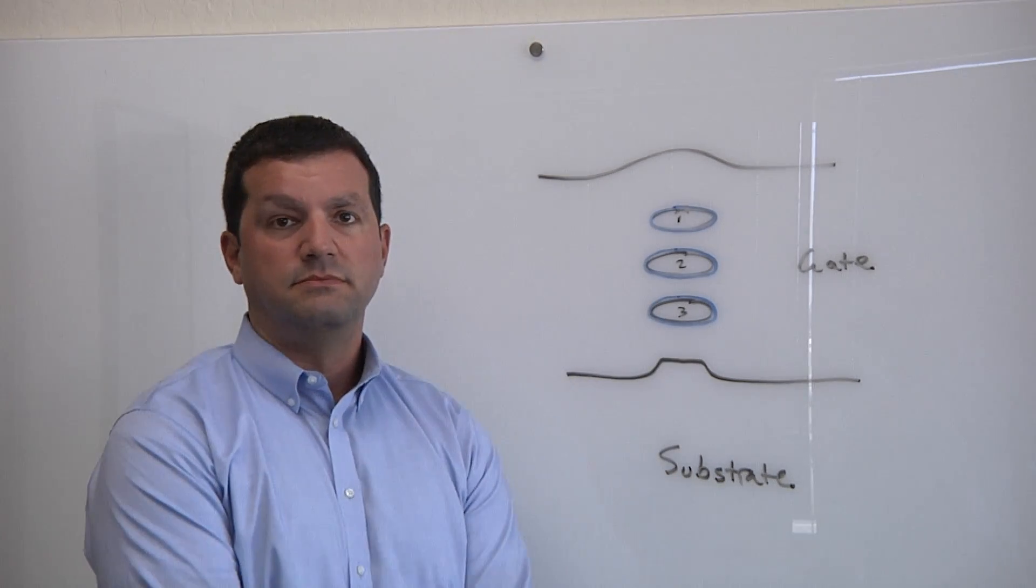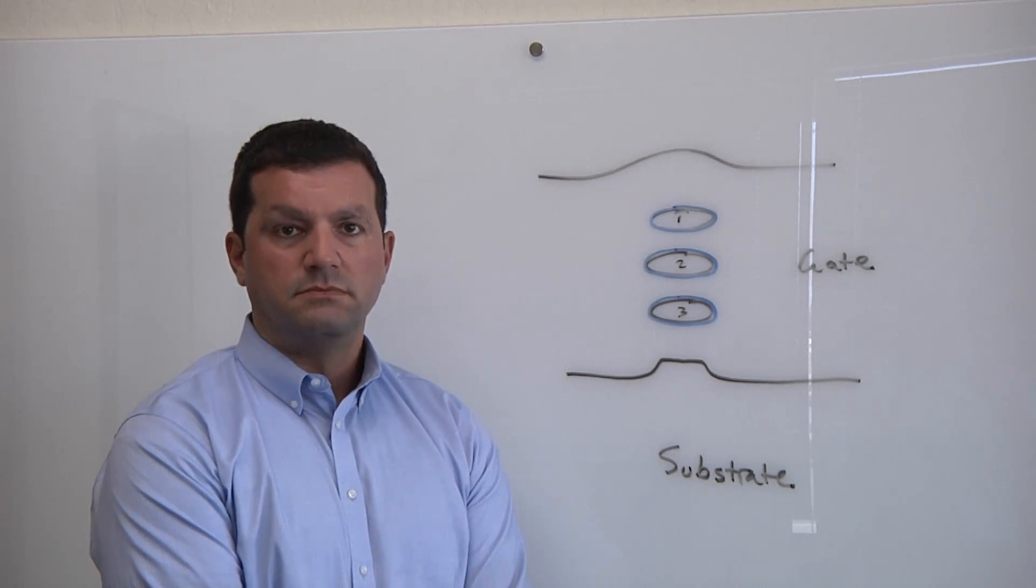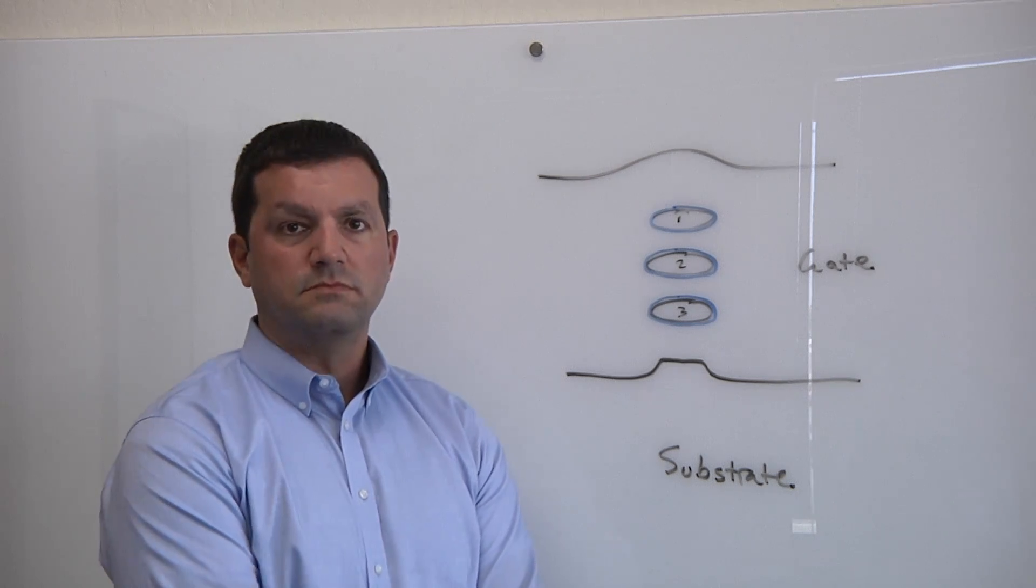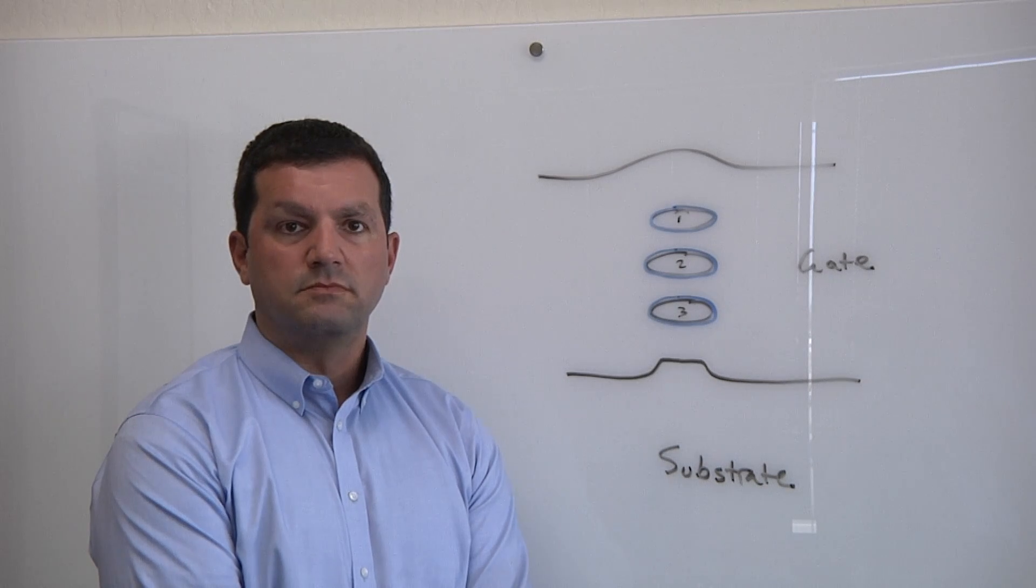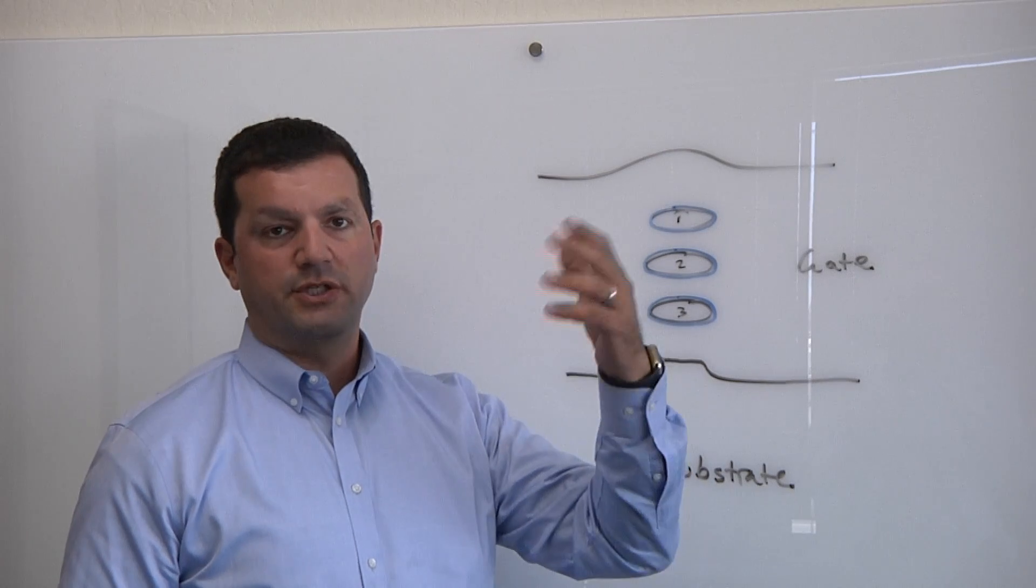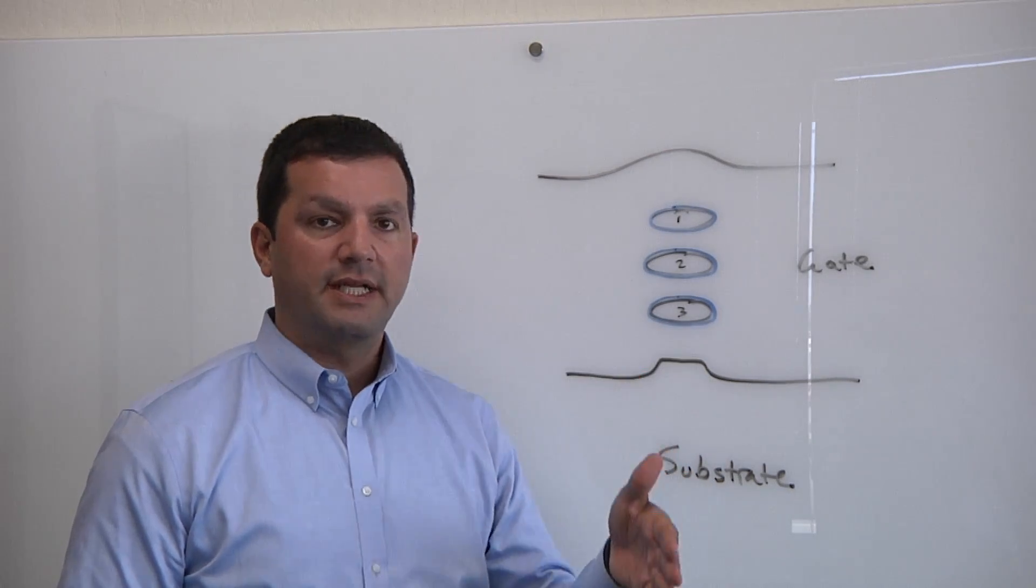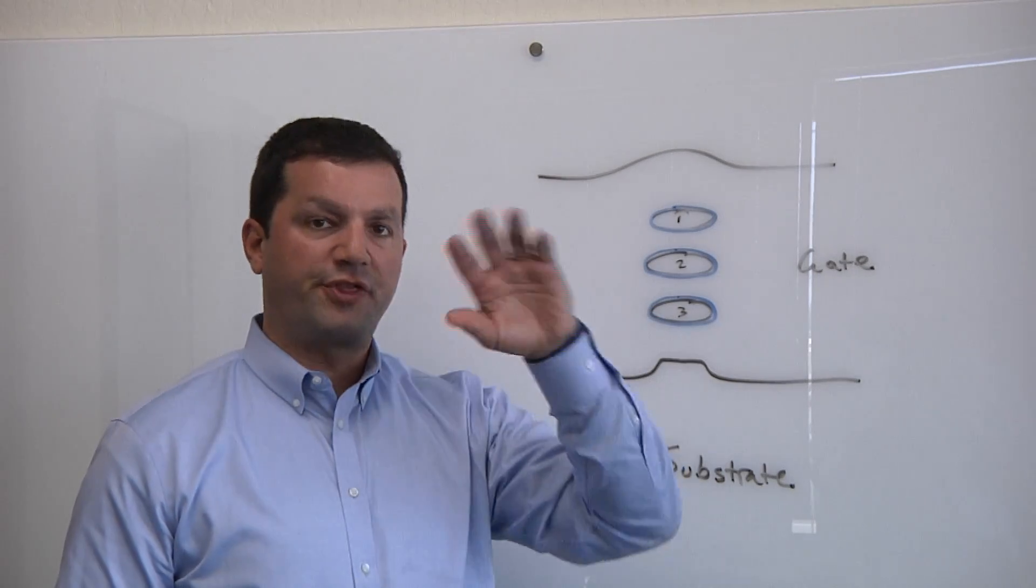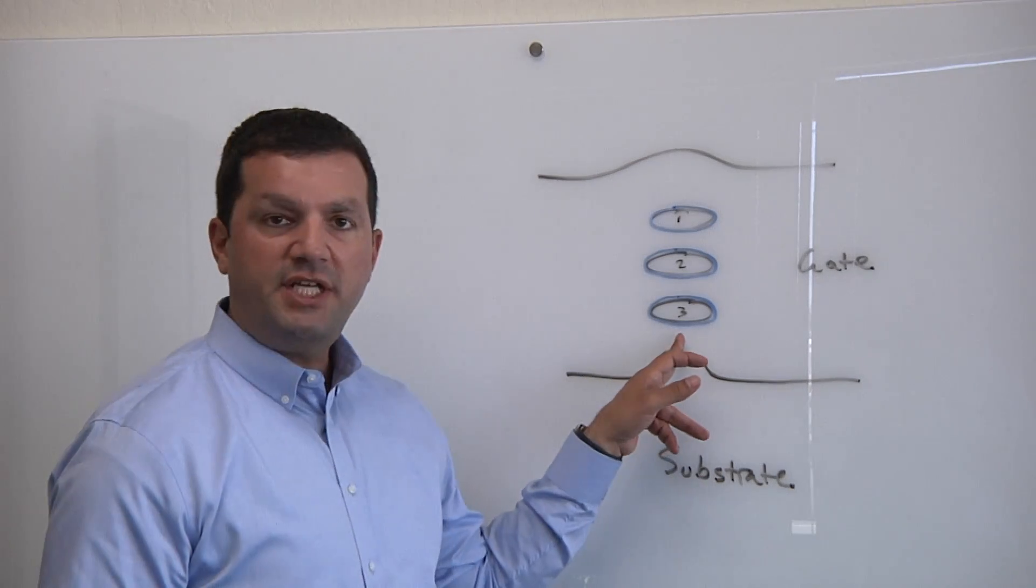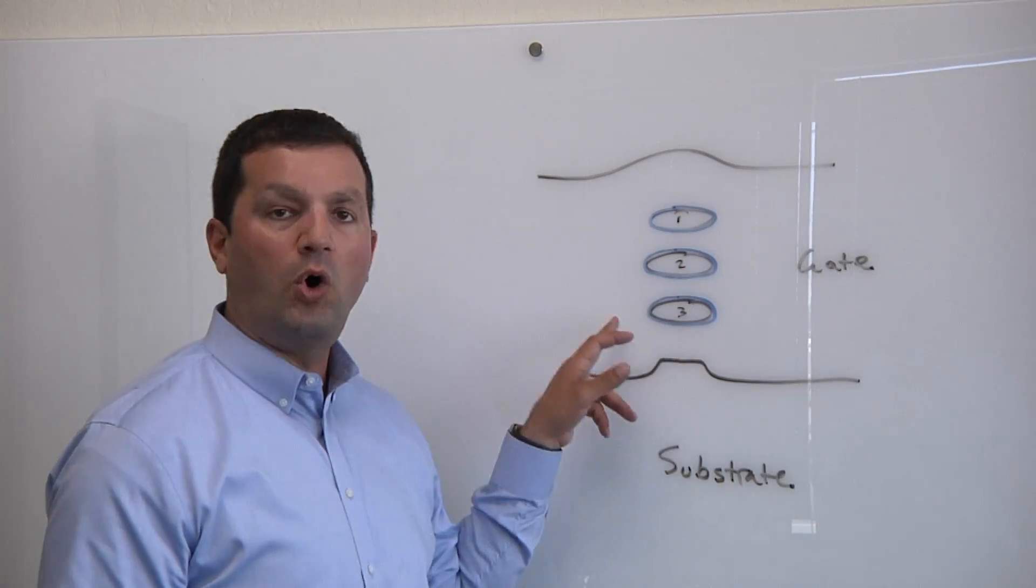We've seen as we get down each new transistor type, so FinFETs, for example, it works great for a while in terms of controlling the leakage, then the dimensions become so small that it doesn't work anymore. Is the same going to happen with nanosheets? So planar FETs, the gate used to control the channel from one side. In FinFETs, the gate controlled the channel basically from two to three sides of the device. Nanosheet or nanowire, it's called a gate all around. The gate controls the channel from all around.